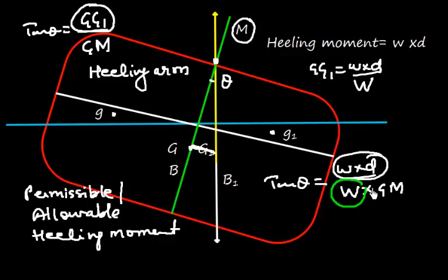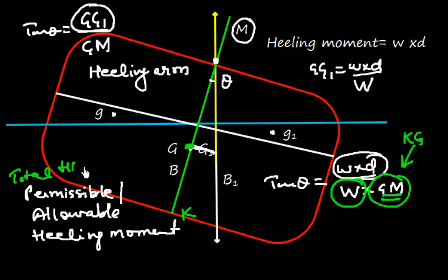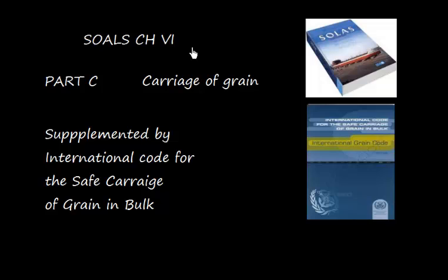These heeling moments are based on the displacement and the KG. Actually, this is K, this is G, and this is M. So GM also depends on KG. As long as the heeling moments are less than the allowable heeling moment, the ship will suffer a loss of stability but within the allowable limit. The total heeling moment should be less than the permissible or allowable heeling moment.